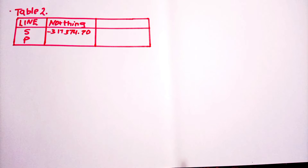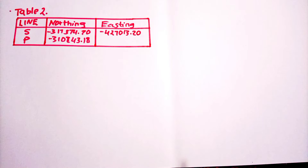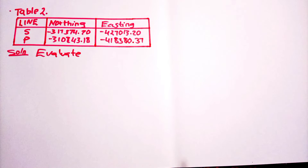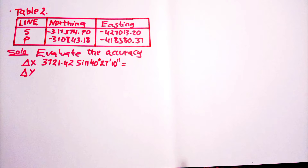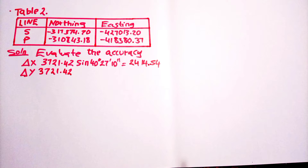In the Bowditch method, we first evaluate the accuracy of the traverse. We are going to deal with the latitudes and the departures. The departure is the change in X, and the latitude is the change in Y — latitude represents the northing and departure represents the easting.